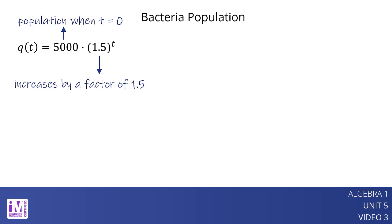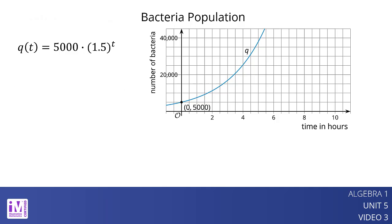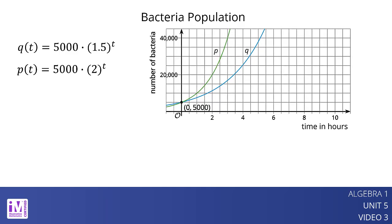A graph can help us see how the starting population and growth factor influence the population. Here is a graph of q. Suppose the function p represents another bacteria population given by p of t equals 5,000 times 2 to the t. Here is a graph of p on the same coordinate plane. The graphs of p and q both start at 0, 5000, but the graph of p is growing more quickly than the graph of q.